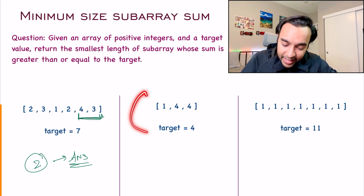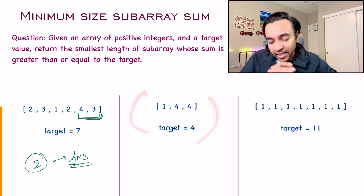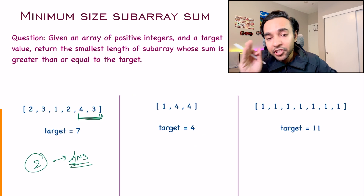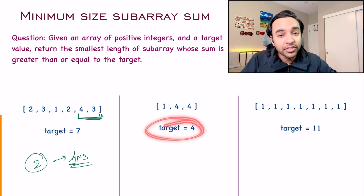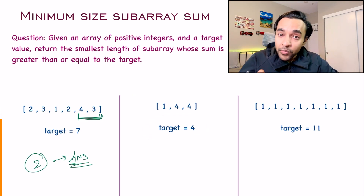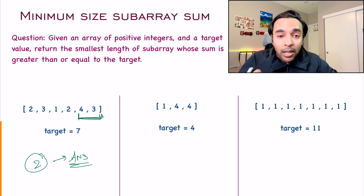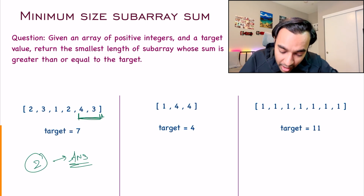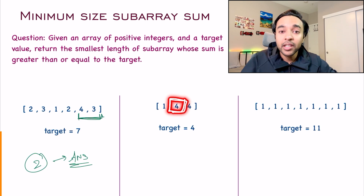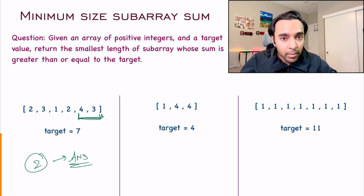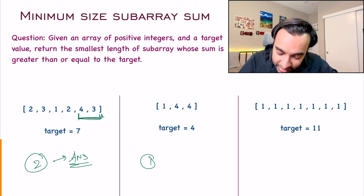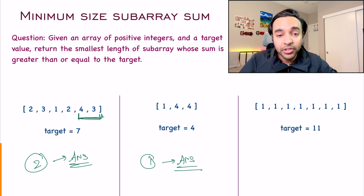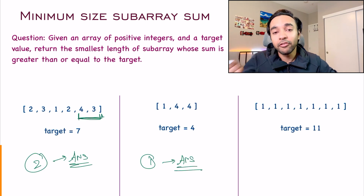Similarly, if you look at the second test case, this time I have 3 elements: 1, 4, and 4. What is the minimum length of the sub-array? If you notice, if you pick just one element, then you are able to reach the target value. So for this particular test case, 1 is your answer, because you only need one element.